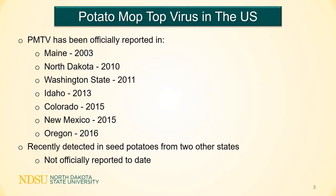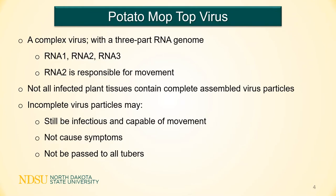PMTV has been officially reported in seven states in the US, starting with Maine in 2003. In addition, it has been recently detected in a couple of other states, but these have not been officially reported. PMTV has a complex genome with three parts, but not all plant tissues may contain the completely assembled virus particle. The incomplete virus particle may still be infectious and capable of movement in the plant, but it might not cause symptoms or be moved to all tubers or stems. This means one tuber may test negative, but other tubers produced by that same plant may be infected.